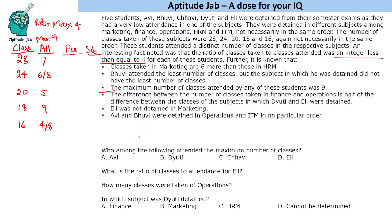Classes taken in marketing are 6 more than those in HRM. A difference of 6 exists between 24 and 18 from our list, so marketing must have 24 classes and HRM must have 18 classes.